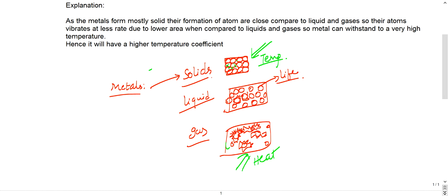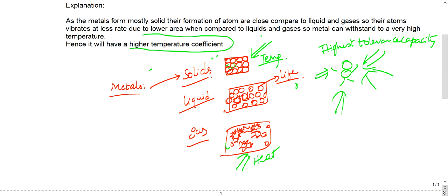If any human being is able to tolerate any kind of problem, we say he's a very good person - he has highest tolerance capacity. Similarly, if a person is facing so many problems from so many directions, he can tolerate anything - highest tolerance capacity. Our solid is also behaving the same way. It can tolerate any kind of heat. Hence, heat is nothing but temperature. In other words, it is said to have highest temperature coefficient. I hope you've understood this concept through this analogy.